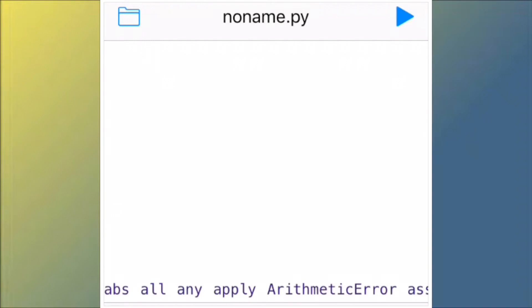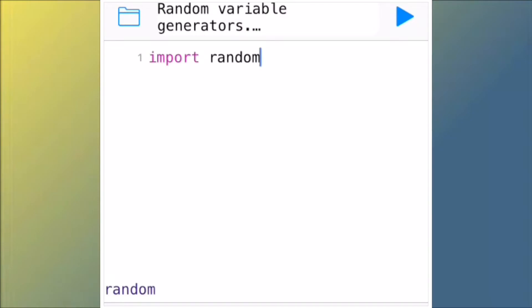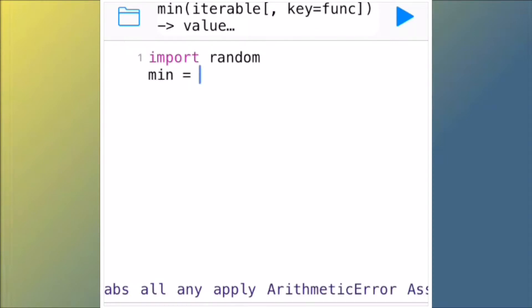First, you want to do import space random, then return to the second line. Min space equals space one. Then go to the third line, max space equals space six.